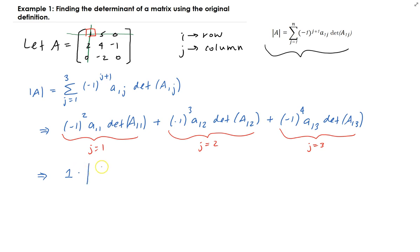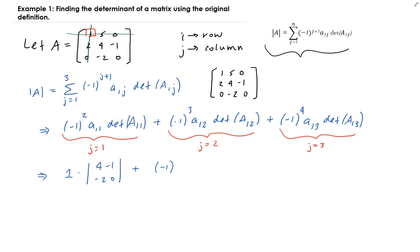So we have 1 times the determinant of that submatrix. Next, minus 1 cubed is minus 1, times A12. For A12 — that's the first row, second column — we cross out this first row and the second column. That reveals the submatrix.